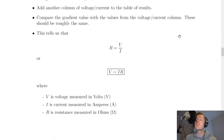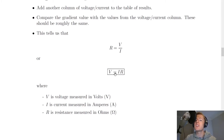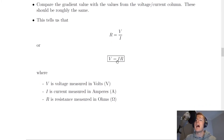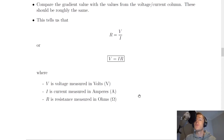Because the values in that final column of voltage divided by current will be roughly equal to the gradient value from the graph, this tells us that resistance equals voltage divided by current — since the gradient is resistance. Rearranging gives us V equals IR. This is the equation relating voltage, current, and resistance on the relationship sheet in the exam, where V is voltage in volts, I is current in amperes, and R is resistance in ohms.